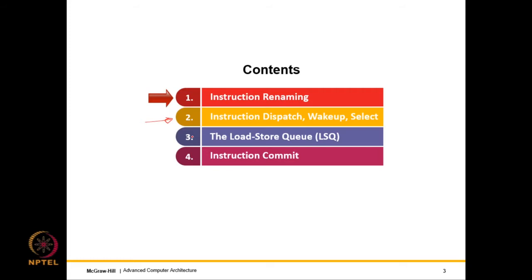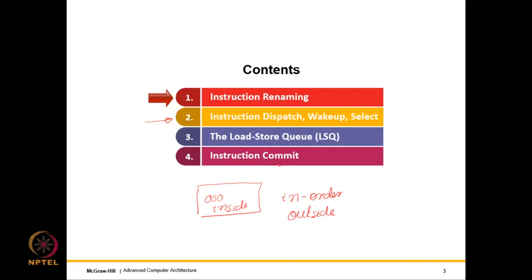Finally, the last part covers instruction commit. Recall the basic abstraction: out-of-order inside, in-order outside. This preserves intuitive in-order execution and guarantees precise exceptions. It requires a novel mechanism called instruction commit or instruction retirement.